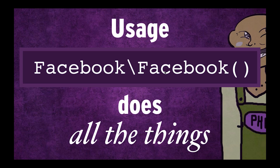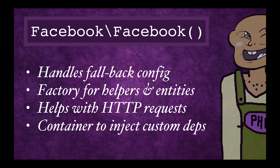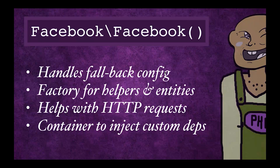So let's see how you use it once you've got it installed. There's the super service class — what I call it — at Facebook\Facebook, and this ties all of the components of the SDK together into one nice little API. For this talk, we're going to use the FB variable to represent the instantiation of this super service. The Facebook super service handles all of the configuration for our app ID and app secret, and it's a factory for generating helpers and entities.